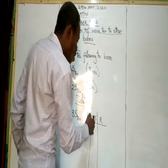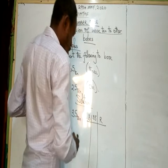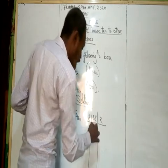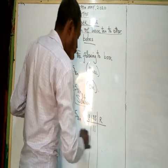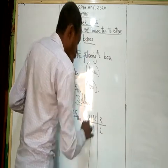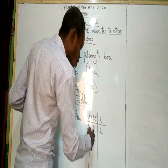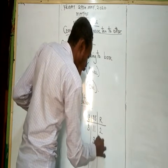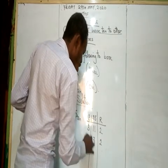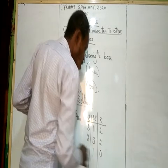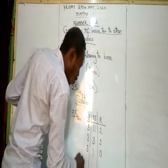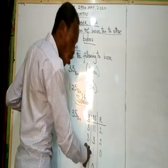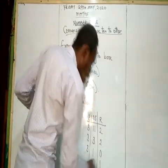Now, how many 3s can I get in 35? That will give me 11, remainder 2. If 3 divides 11, it will give me 3, remainder 2. 3 divides 3, it will give me 1, remainder 0. If I use 3 to divide 1, it will give me 0 because it is impossible, and the remainder is 1.